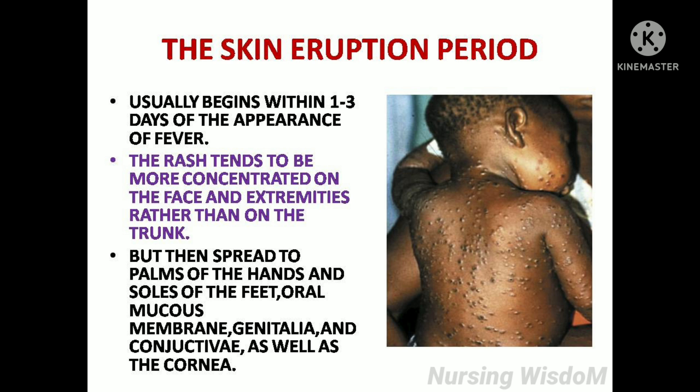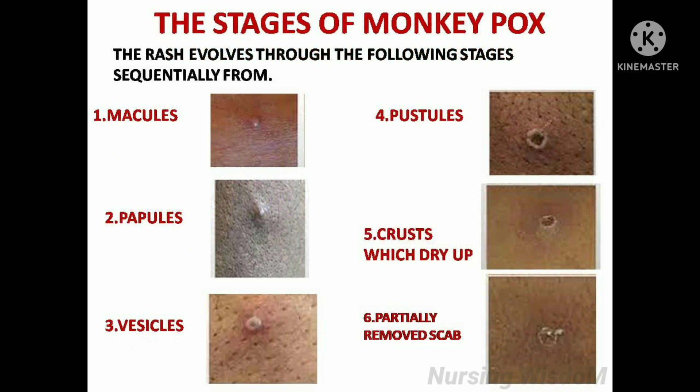The skin eruption period usually begins within 1 to 3 days of the appearance of fever. The rash tends to be more concentrated on the face and extremities rather than on the trunk, then spreads to the palms of the hands, soles of the feet, oral mucous membranes, genitalia, and conjunctiva as well as the cornea. The rash evolves sequentially through: macules, papules, vesicles, pustules, crusts which dry up, and partially removed scabs.